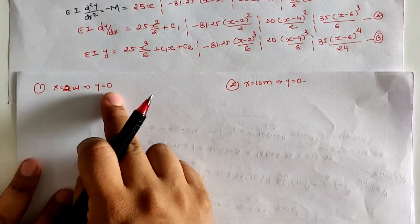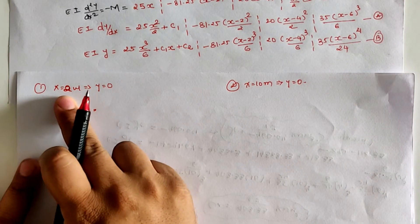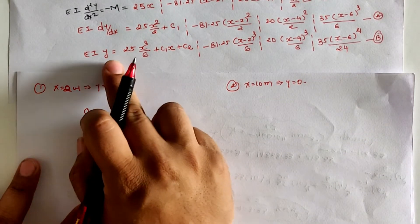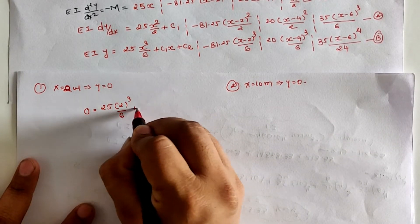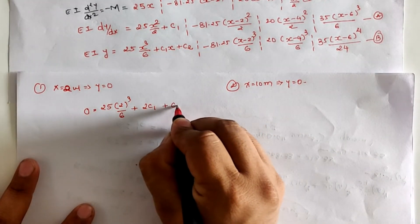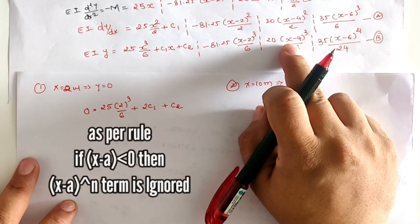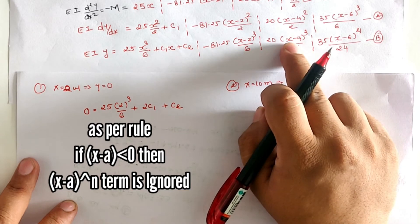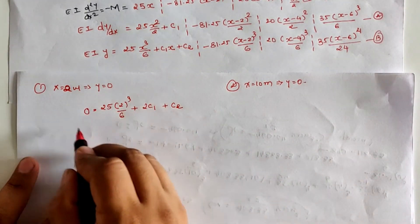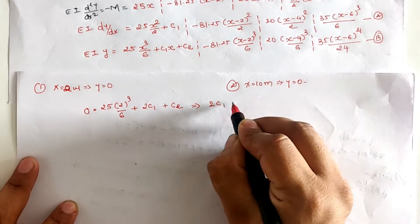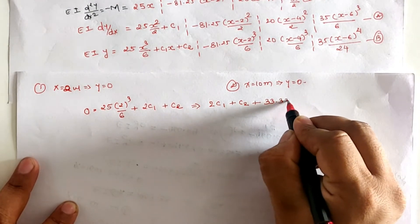Applying the first boundary condition x = 2, y = 0 in Equation B: substituting x = 2 gives 25·(2)³/6 + C₁·(2) + C₂. For the remaining terms: (2 − 2) = 0 so that term is zero; (2 − 4) = −2, so it is ignored; and (2 − 6) = −4, also ignored. This gives the equation: 2C₁ + C₂ + 33.33 = 0.